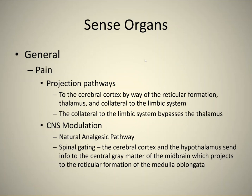Projection pathways to the cerebral cortex go by way of the reticular formation, thalamus, and a collateral to the limbic system. That collateral to the limbic system actually bypasses the thalamus. Almost all senses go through the thalamus — smell does not, and this one pain pathway does not; all the rest do. We're also going to be talking about CNS modulation, a natural analgesic pathway.